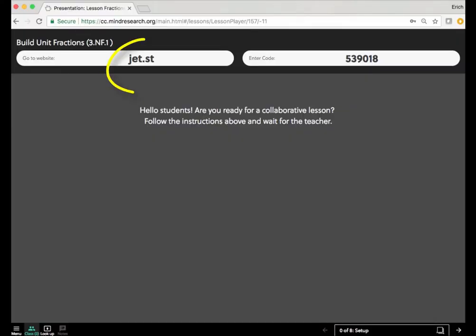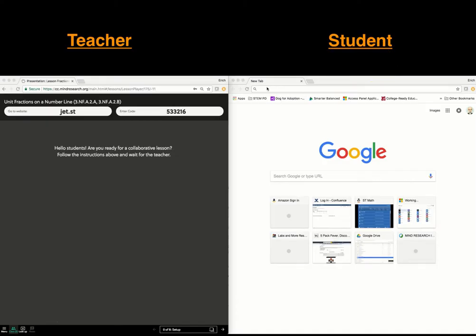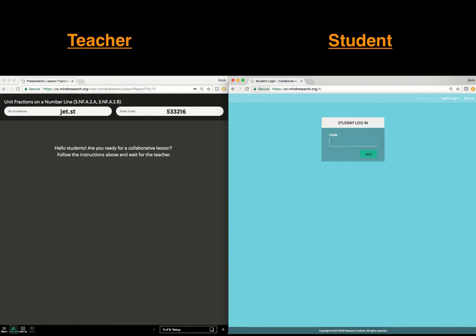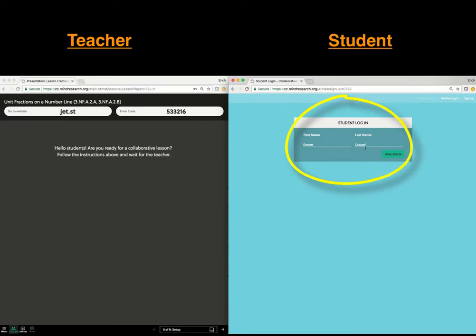Students will be directed to log in to jet.st and use the given code to join the lesson. Have students type jet.st into their browser address bar at the top of the browser window. Students will enter the login code and their first and last name.